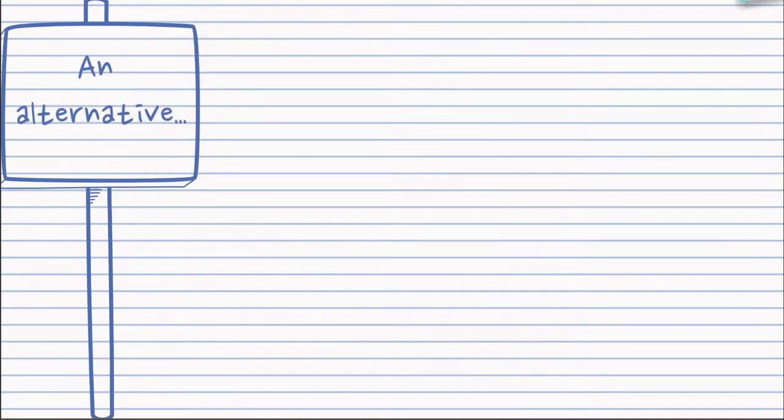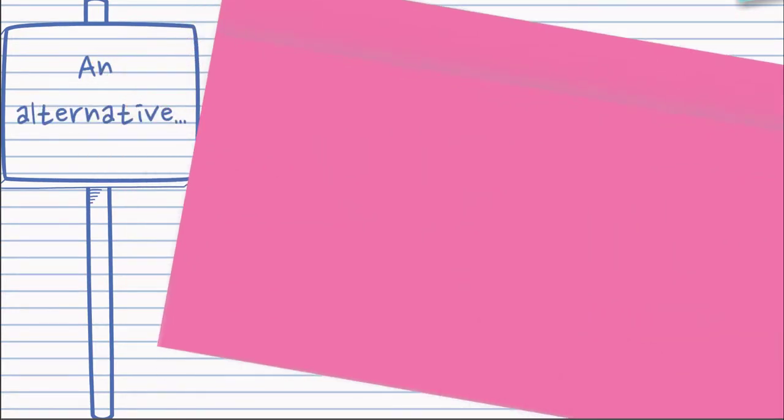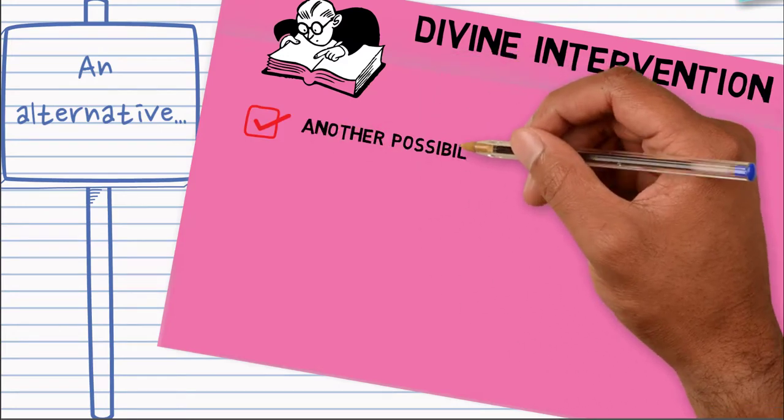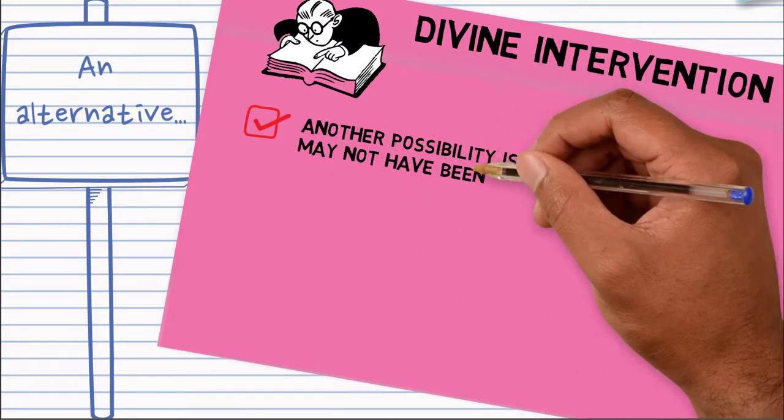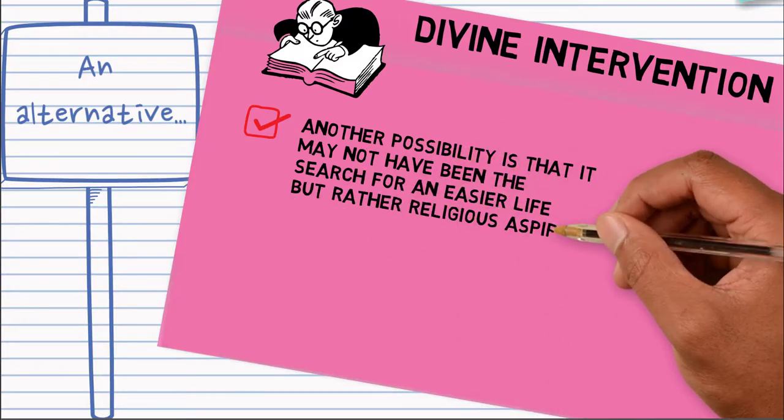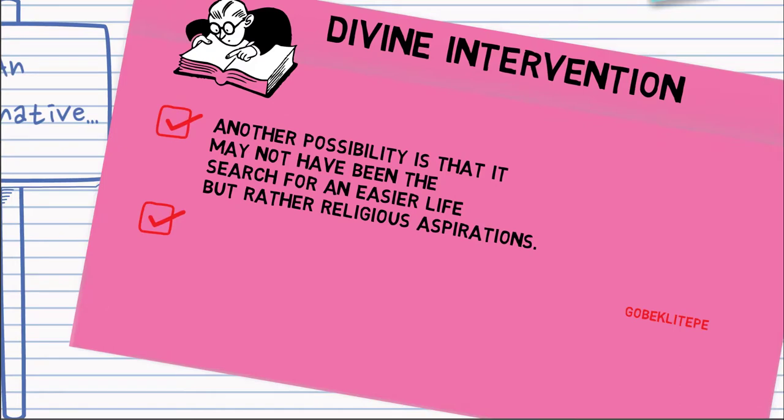Now, he also identifies that there's an alternative explanation available. And one is that this was more of a religious thing, that it was divine intervention that led to this. And the whole thing may not have been the search for an easier life, but rather religious aspirations.